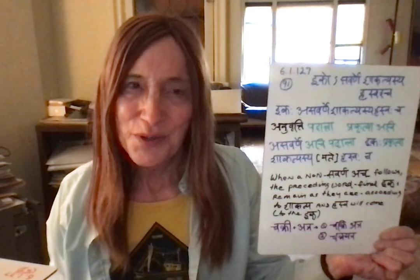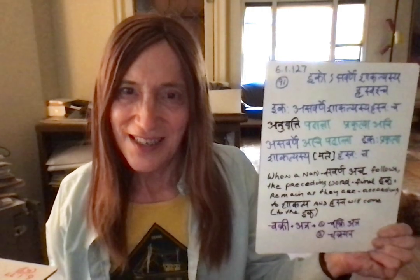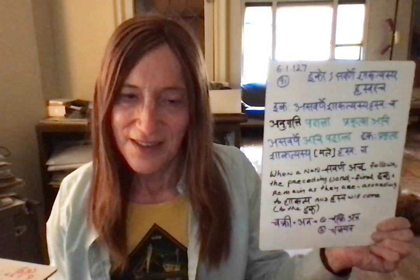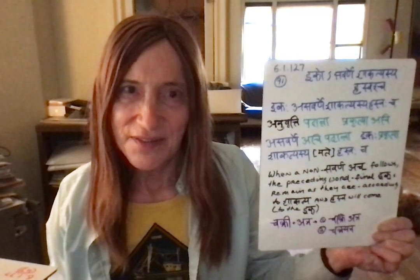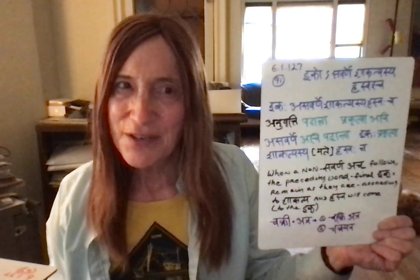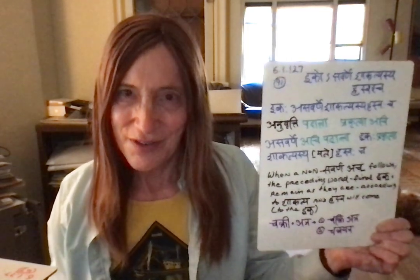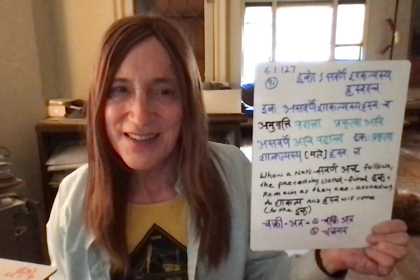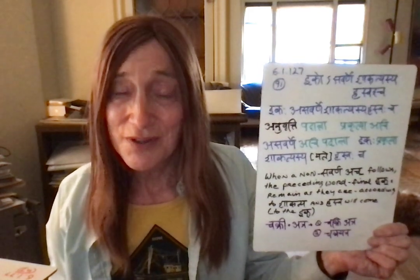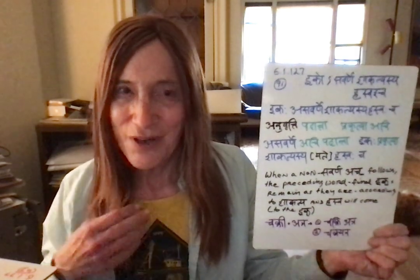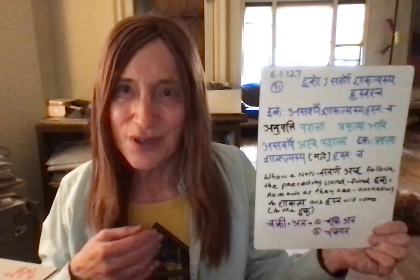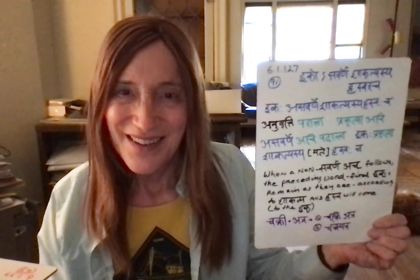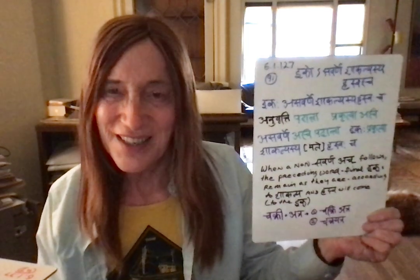Today's sutra is 6-1-127 in Ashtadhyayi and 91 in Siddhanta Kaumudi: eko savarne shakal yasya rasvasca. I mentioned in the last video that I'm going to do two videos about this. The second one will provide a detailed derivation in terms of our rules of the grammar — how everything works, why it works, and referring back to a bunch of our sutras studied before.